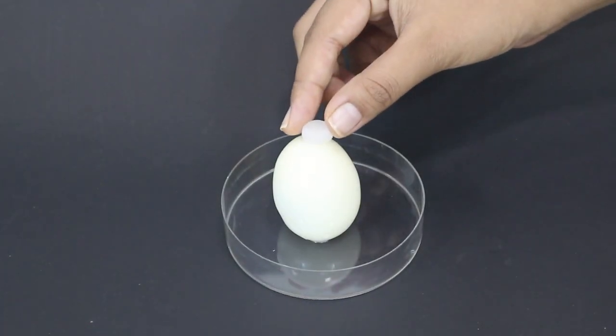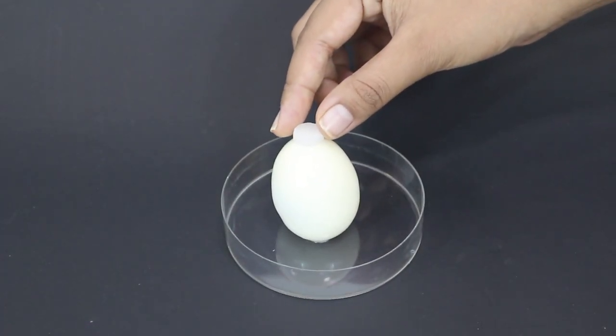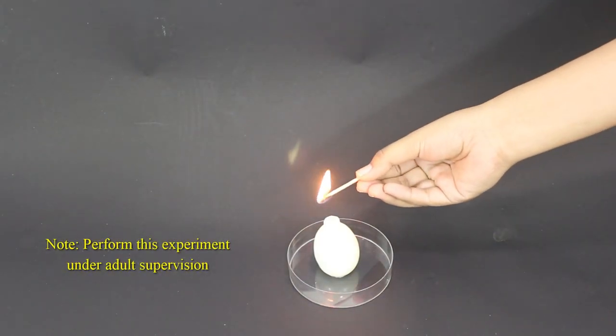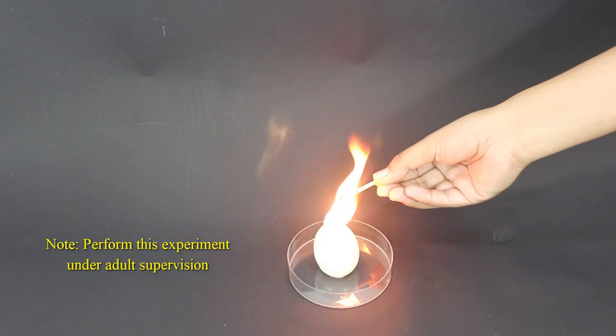Instead of the lighter, you can also try with a bigger flame. Place the camphor on the top of the boiled egg. Light the camphor and slowly bring the bottle above the flame.